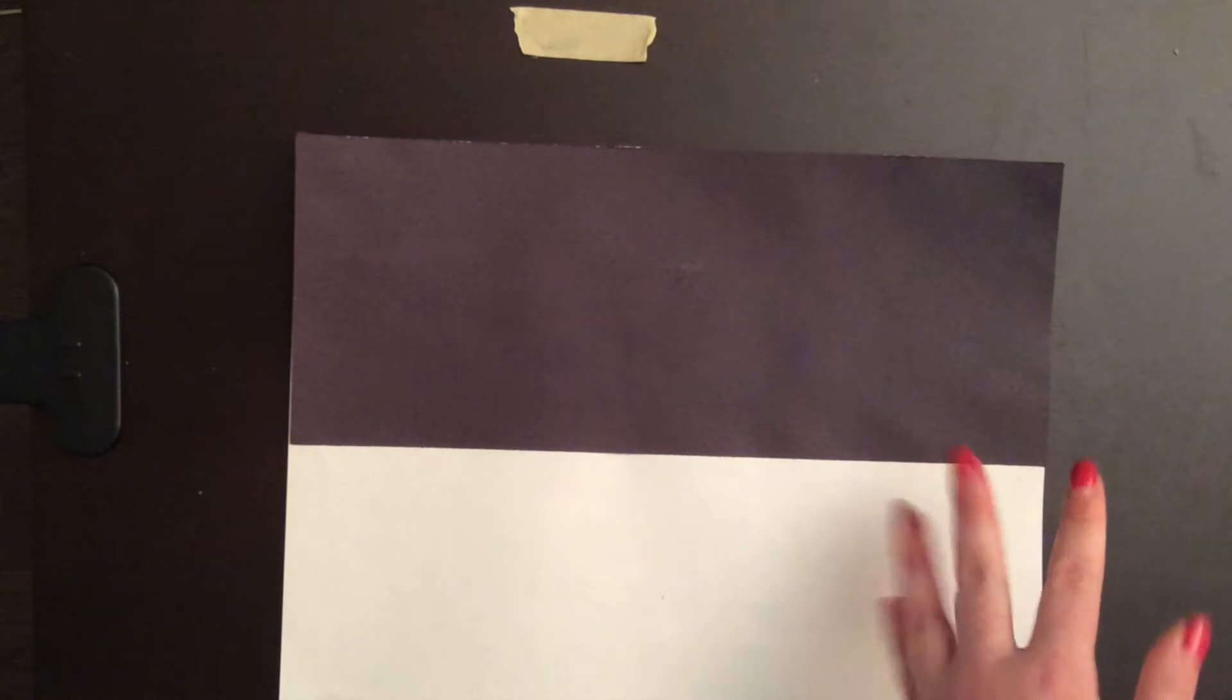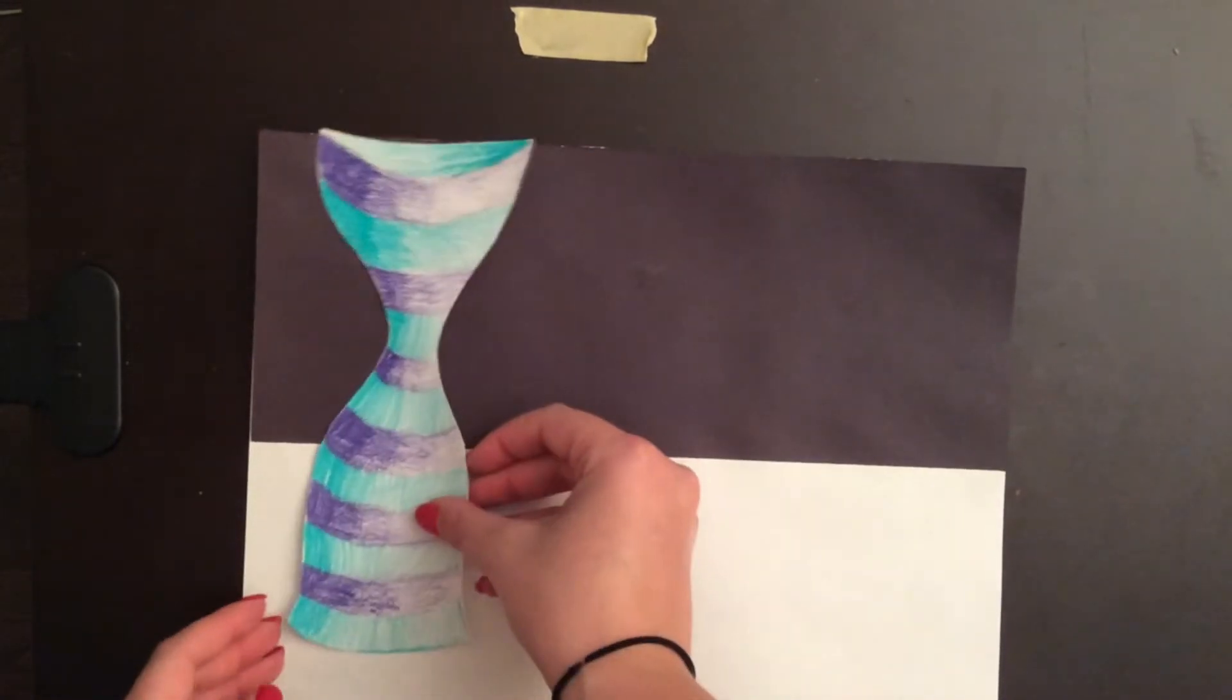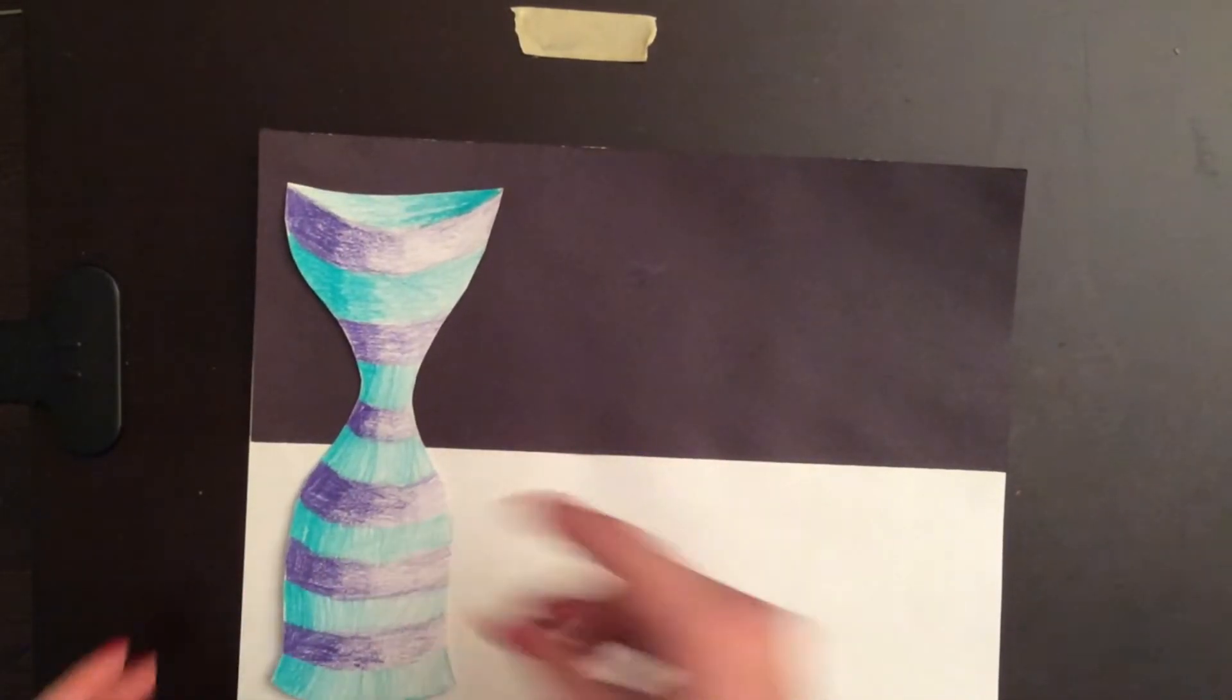Now it's time to arrange your composition. Take all of your forms that you've cut out and delicately place them around wherever you think looks good on your page.